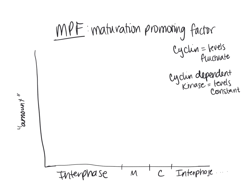If we look at the levels of cyclin throughout the cell cycle, we would see an increase and decrease throughout — increasing during interphase, then a sharp decrease during M phase, followed by a continuing decrease in cytokinesis. Then during the next interphase, the cyclin levels would begin to rise again.